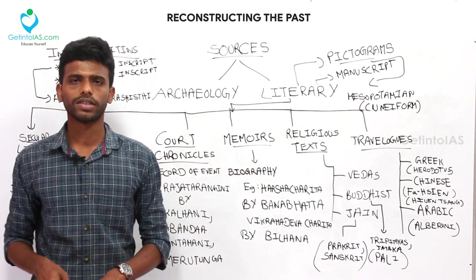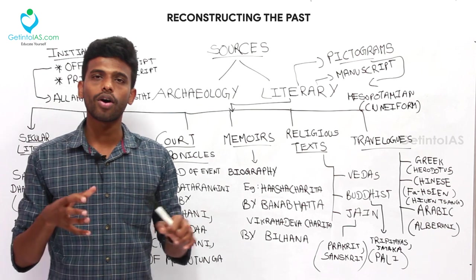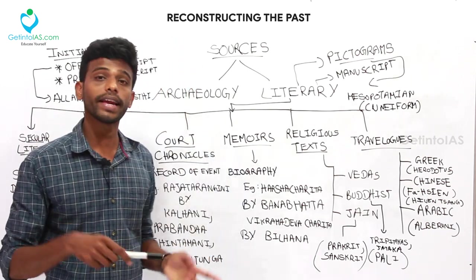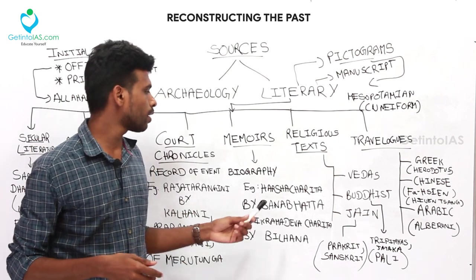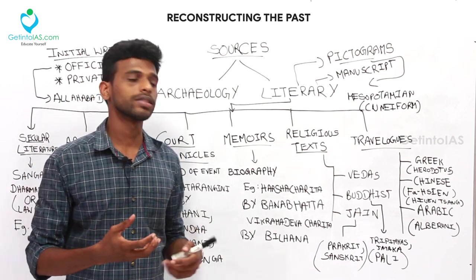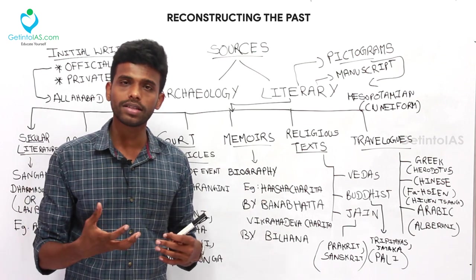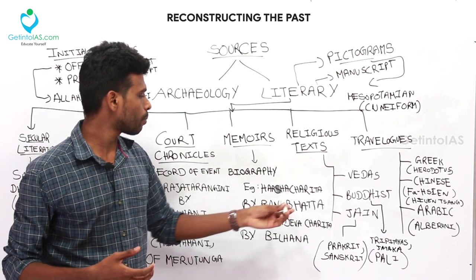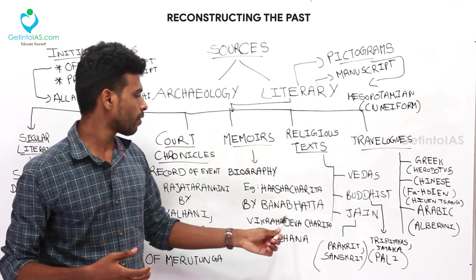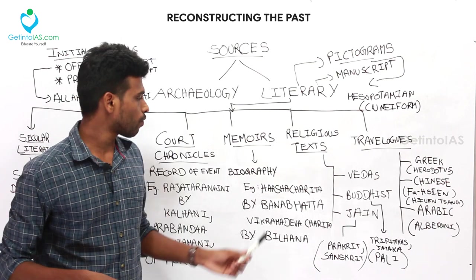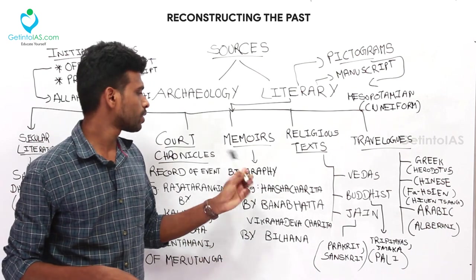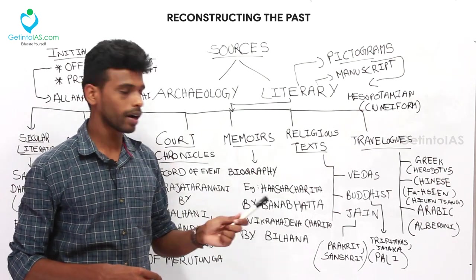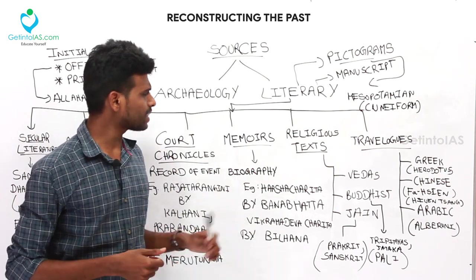The next literary source category is memoirs — biographies. Just as court poets wrote official inscriptions, in later periods people started writing the achievements and valor of kings in the form of biographies. Biography means the life story of a person. One such example is Harshacharita by Banabhatta, which portrays King Harshavardhana, and Vikramadevacharita by Bilhana.